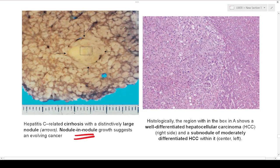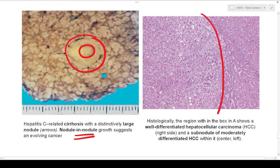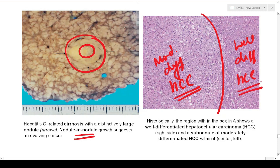The dysplastic nodule diagram shows a nodule-within-a-nodule appearance — a small area representing carcinoma within a high-grade dysplastic nodule. In another diagram, a nodule-in-nodule pattern is shown where a moderately differentiated hepatocellular carcinoma is present within a well-differentiated hepatocellular carcinoma nodule. This occurs because additional driver mutations gave one clone a growth advantage over the well-differentiated variety.